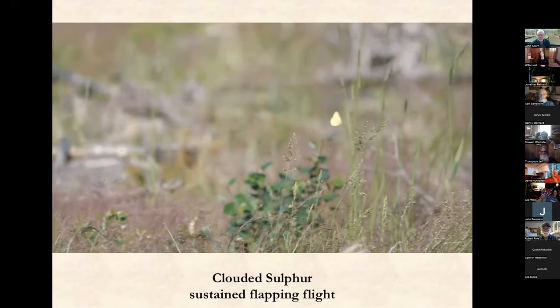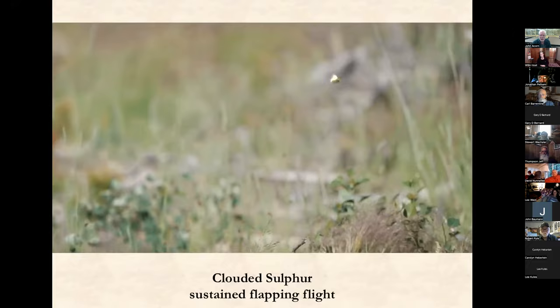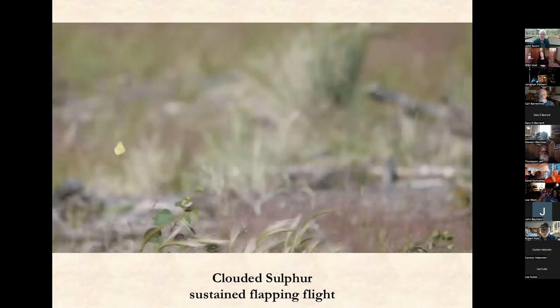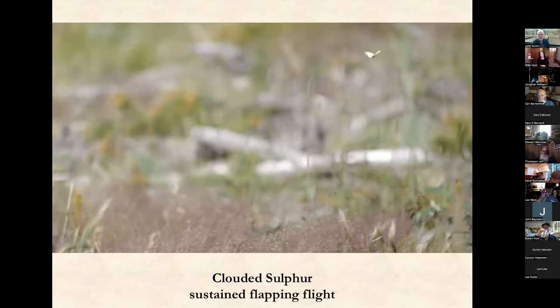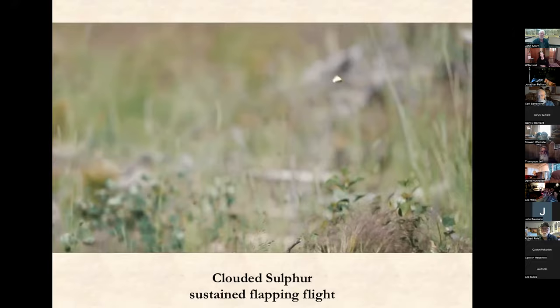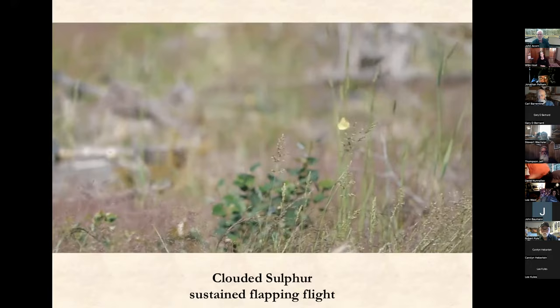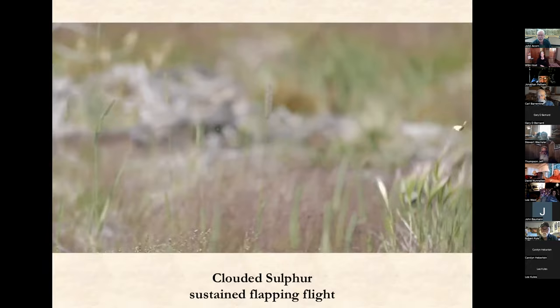Pretty straightforward — quite different from the morpho. The flight is much more powerful; you can see it's achieving a higher relative speed. More importantly, this butterfly is continually flapping: this is sustained flapping flight. Most of the engineering literature on butterfly aerodynamics tends to assume this is how butterflies fly, because you can model sustained flapping a lot more easily than some of the other flight styles I'm showing you. But there's an example of a butterfly that simply keeps on flapping — not much else happening except flapping.